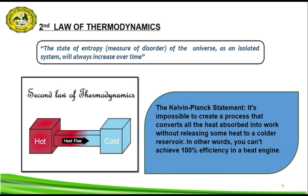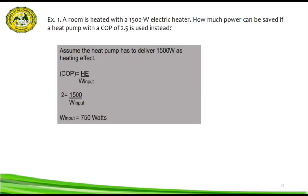The Kelvin-Planck statement collectively emphasizes the idea that energy naturally tends to disperse and spread out, as seen in the image, and it is difficult to reverse this process without external intervention. The second law of thermodynamics is a key reason why perpetual motion machines — machines that produce more energy than they consume — are impossible, and it plays a crucial role in understanding the direction of various physical and chemical processes.